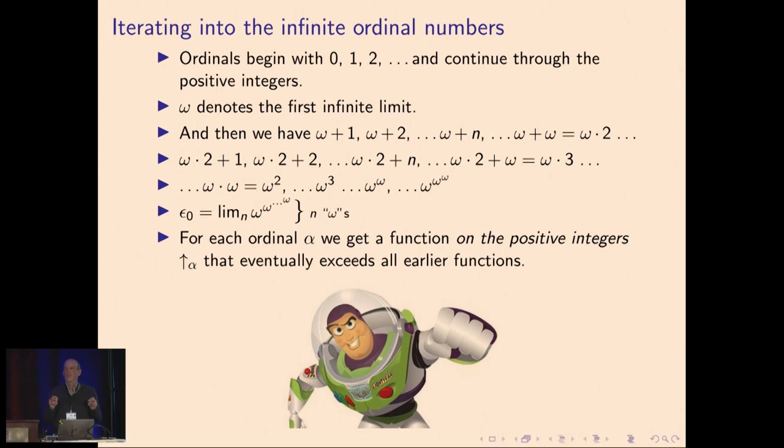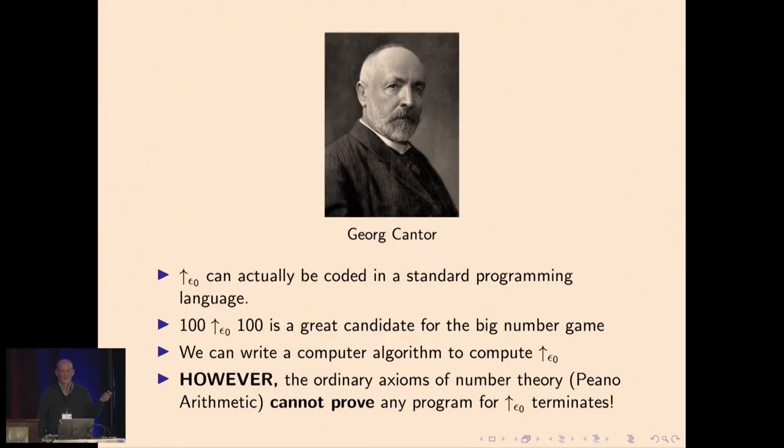This is a systematic way of using infinite numbers to define functions on the positive integers that have positive outputs, and each up arrow α exceeds all of the earlier functions. The ordinal ε₀ was studied extensively by Gentzen, and we could imagine using that in the big number game. We can write a computer algorithm that computes the up arrow ε₀.